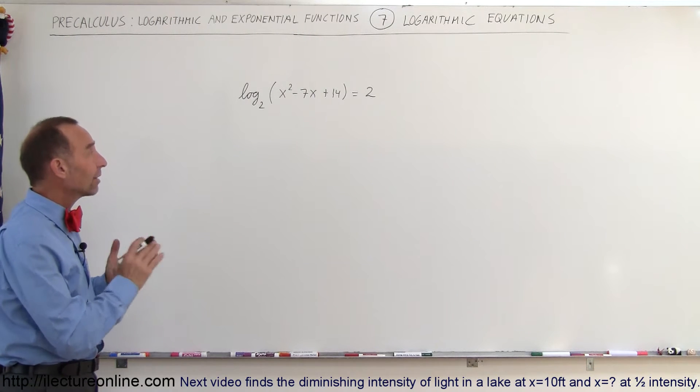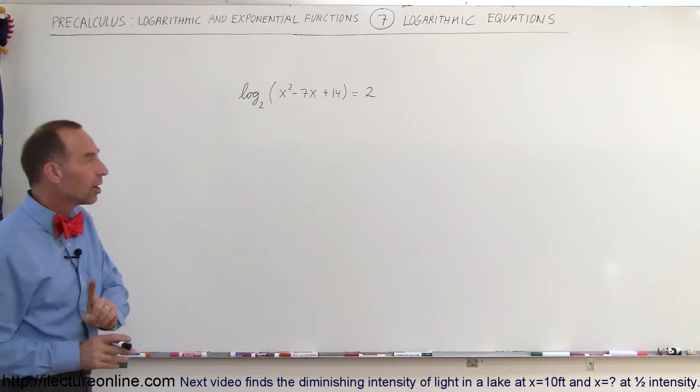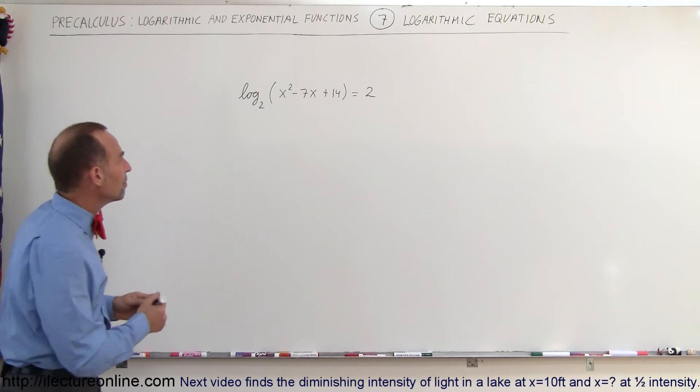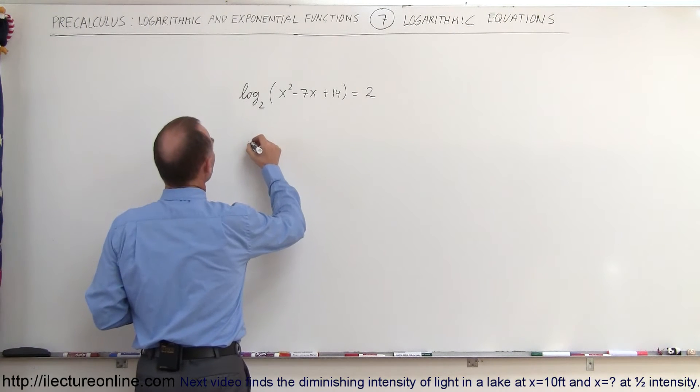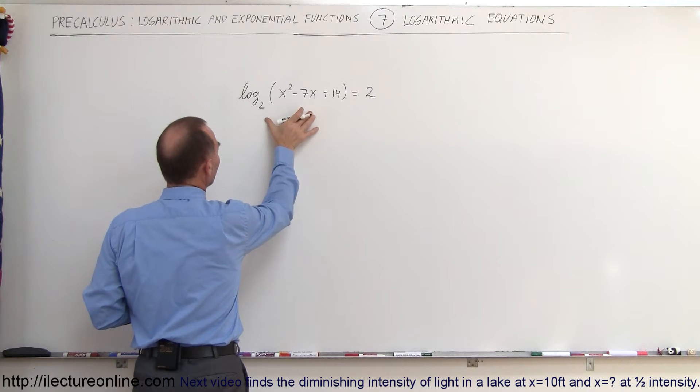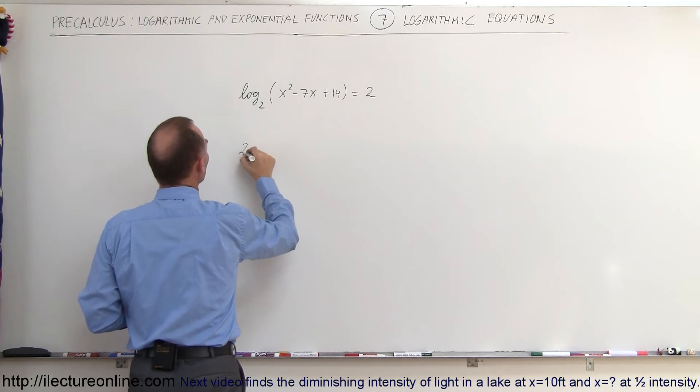We're going to take the antilog of both sides, but it has to be the antilog to base 2, which means we take this as the exponent of base 2. So 2 raised to the log base 2 of (x² - 7x + 14)